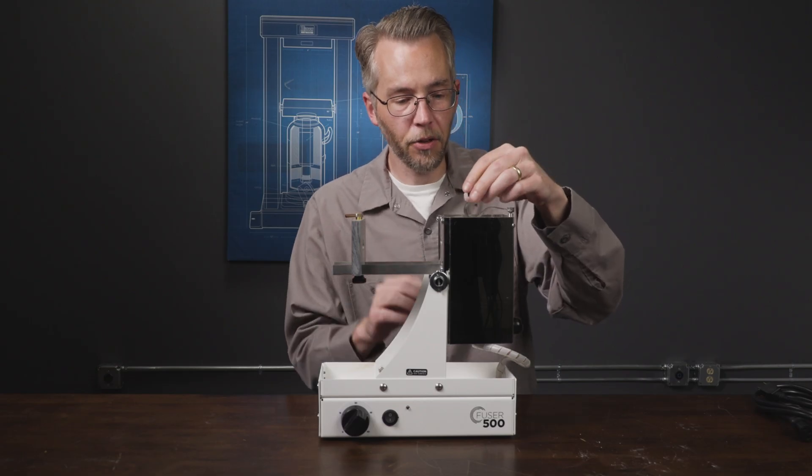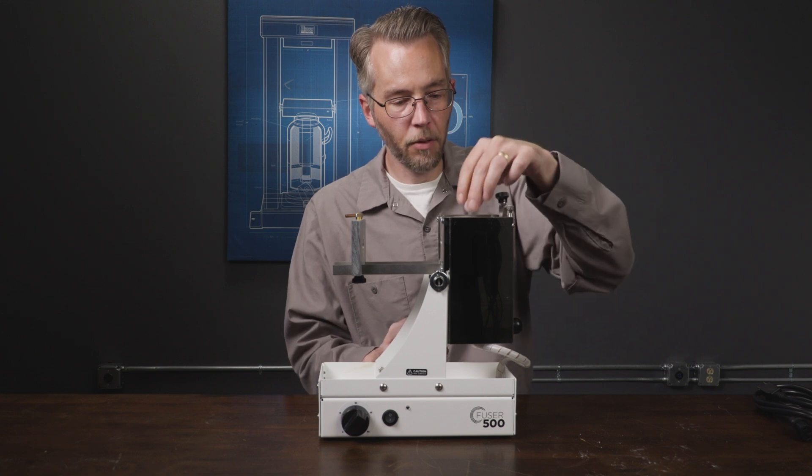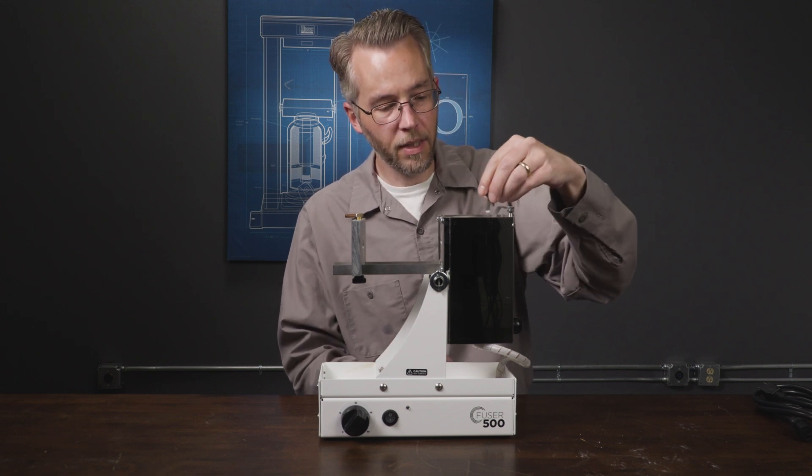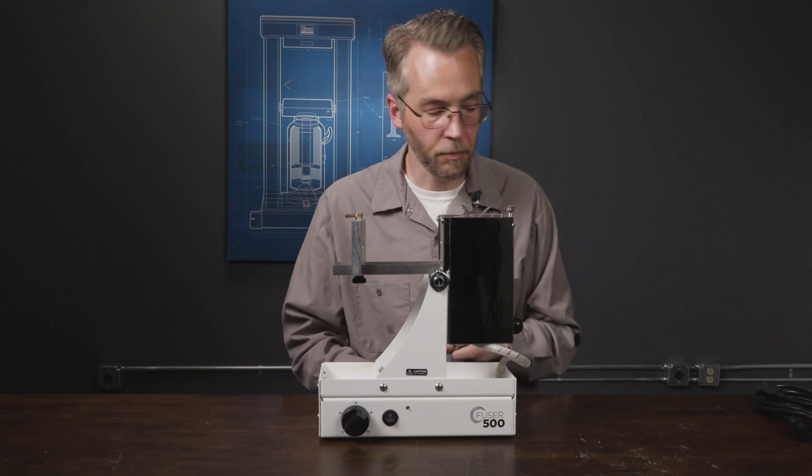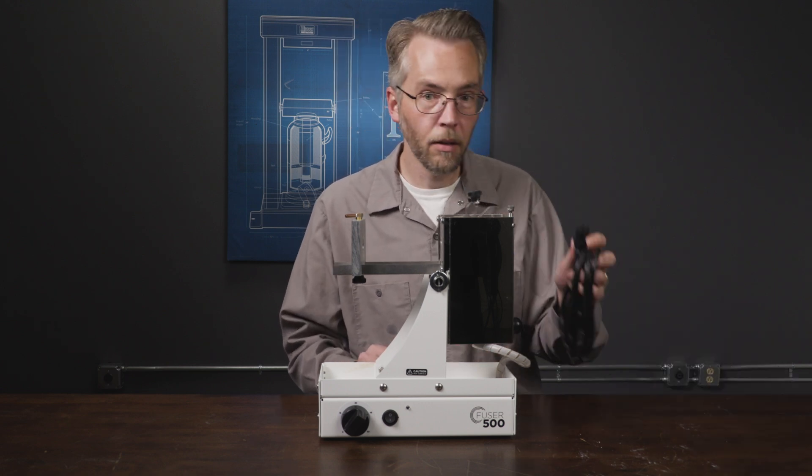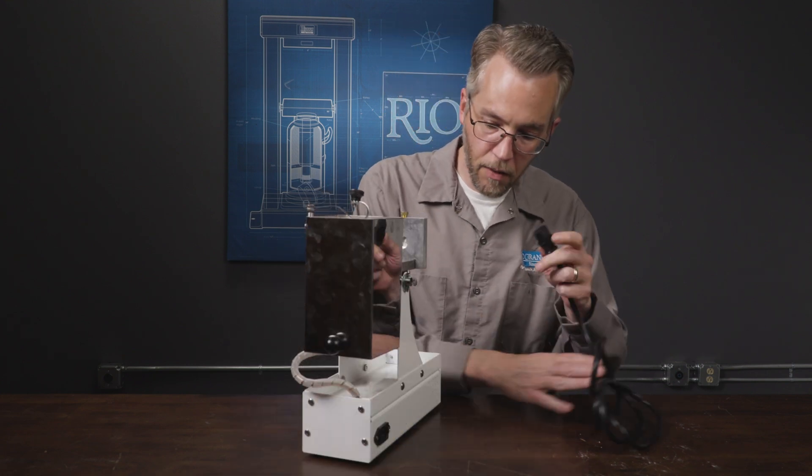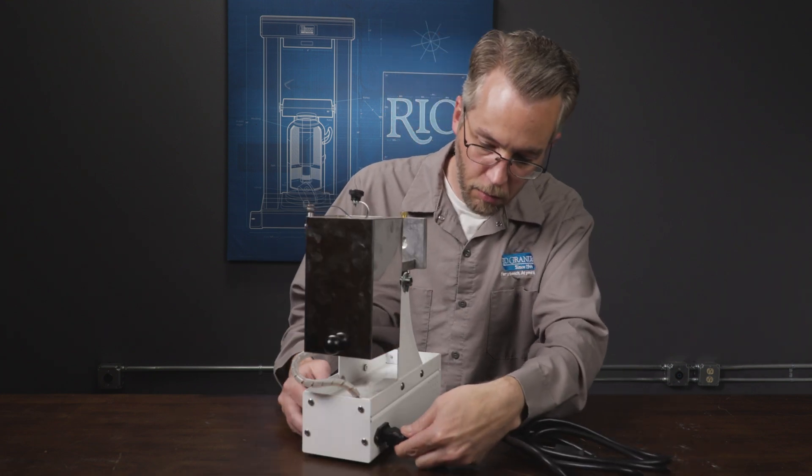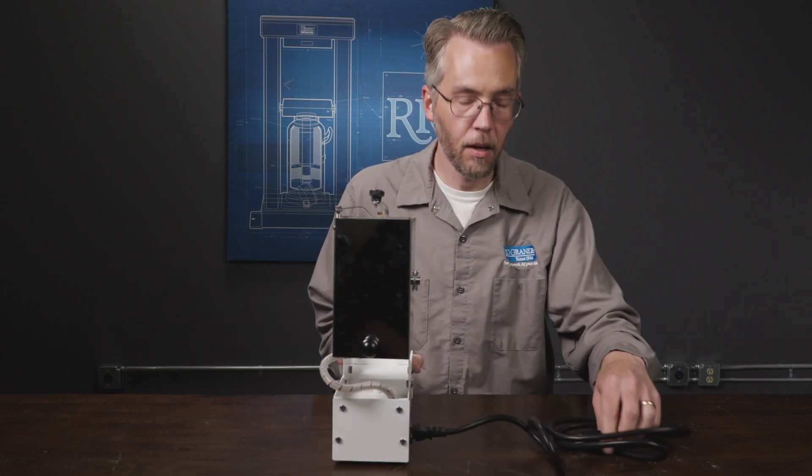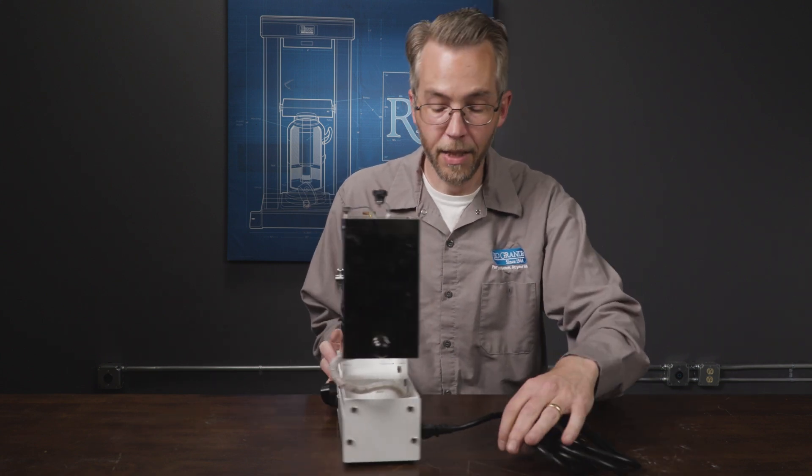And that will keep that nice and secure and we can just slide it out of the way whenever we want to view what state our metal is currently in. Now lastly, we have the power cord. Very simple, we'll just plug the power cord into the back and plug it into a regular 110 outlet.